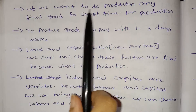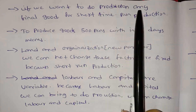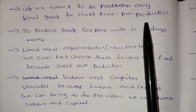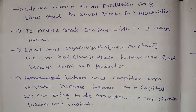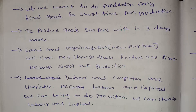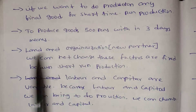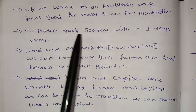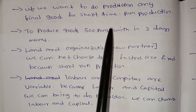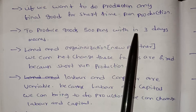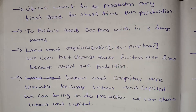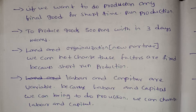If we want to do production of any final goods in a short time — short-run production — we need to produce those final goods within that short period. For example, to produce 500 goods within 3 days, we must meet that target.